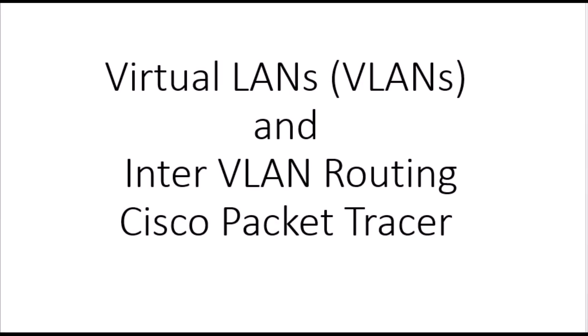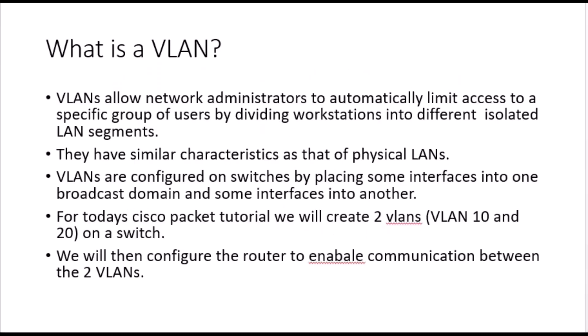Today we are going to cover an important topic of networking and implement it in Cisco Packet Tracer. We will cover virtual LANs and implement inter-VLAN routing. VLANs basically allow network administrators to limit access to a particular group of users by dividing workstations into different isolated LAN segments. A physical LAN is divided into virtual segments, and these VLANs have similar characteristics as a physical LAN. They are configured on switches, placing some interfaces into one broadcast domain and others into another.